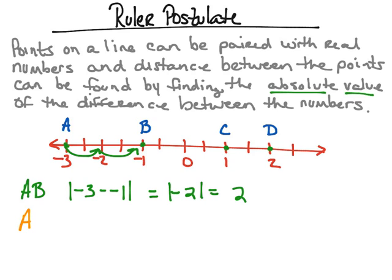Let's try the distance between point A and point C. We take the absolute value of the difference between their coordinates. A is negative 3, and C is positive 1. Negative 3 minus 1 equals negative 4. Taking the absolute value of negative 4 gives positive 4. So the distance between point A and point C is 4 units — we can count 1, 2, 3, 4 on the number line to confirm.